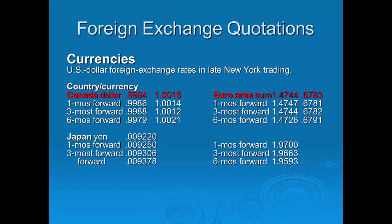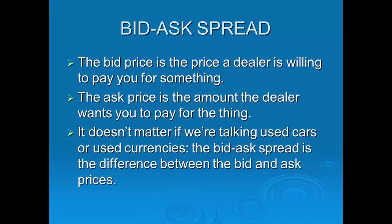Whenever you go to a market — bonds, stocks, or currencies — you are likely dealing with two prices: the bid price and the ask price. The bid price is the price a dealer is willing to pay you for something; if you want to sell a dollar, the bid price is what you receive. The ask price is the amount the dealer wants you to pay. For example, if you are going to Europe and want to buy euros at the airport, you see two prices: the ask price at which you can buy and the bid price at which you can sell.